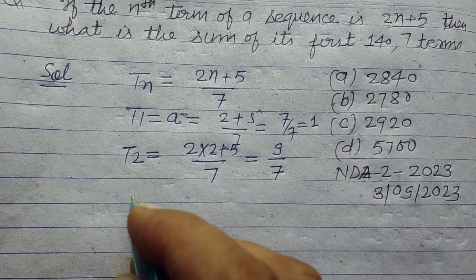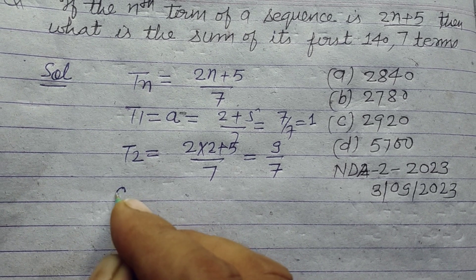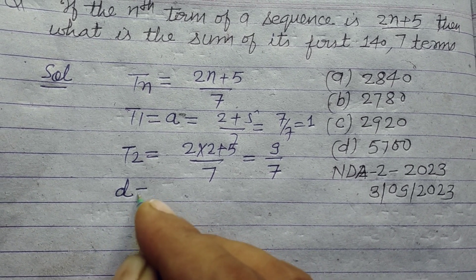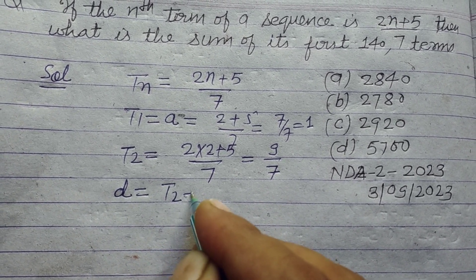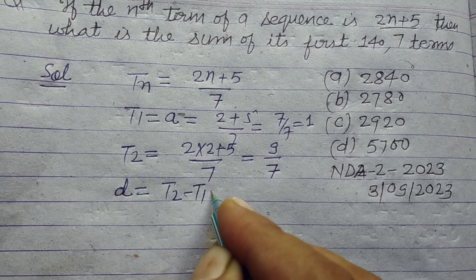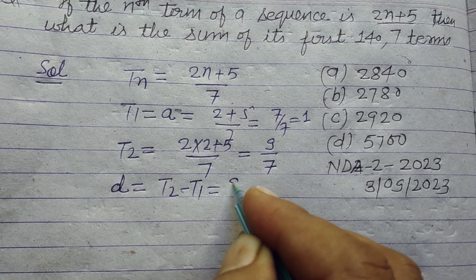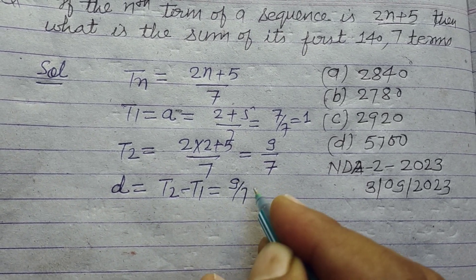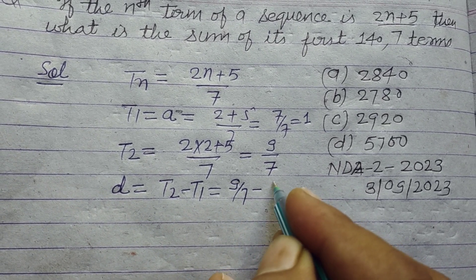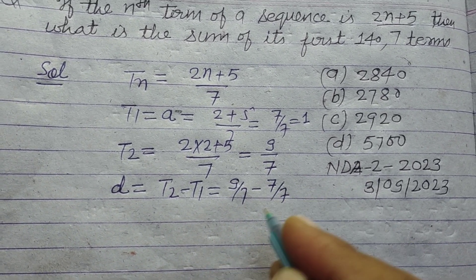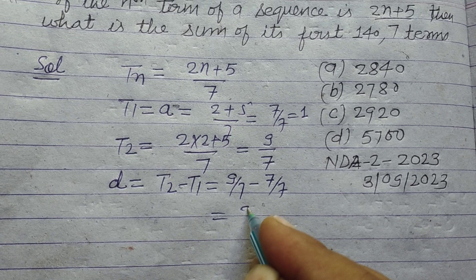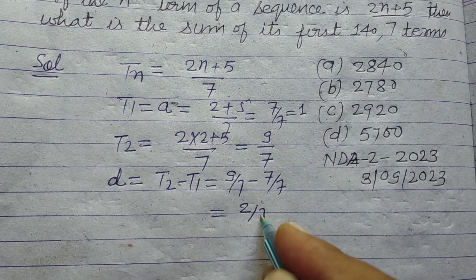The common difference d is t2 minus t1, so (9/7) minus (7/7), which gives us 2/7.